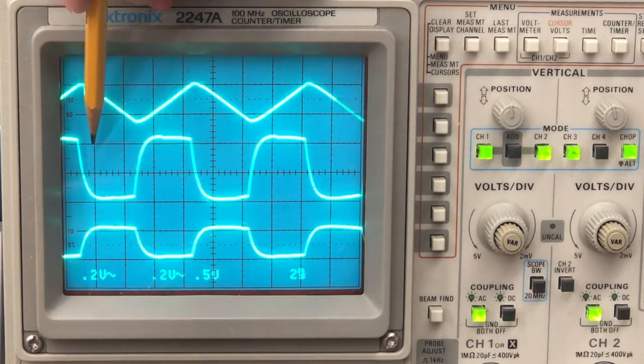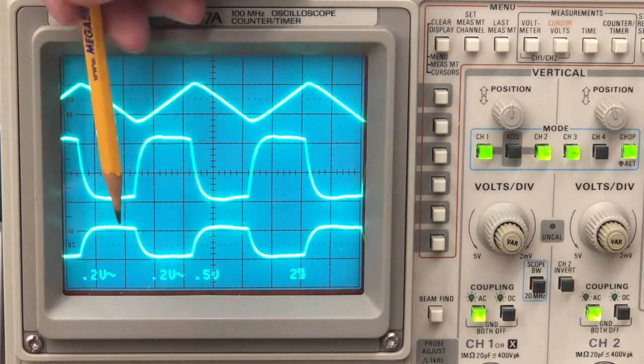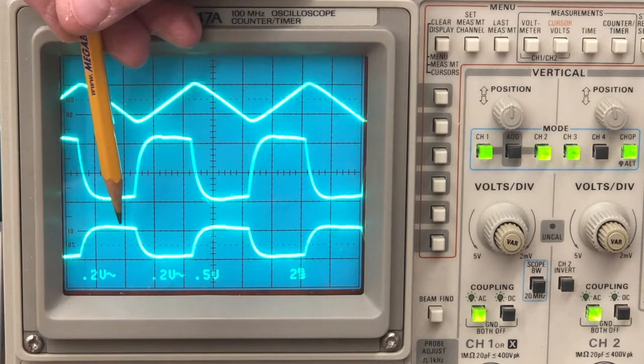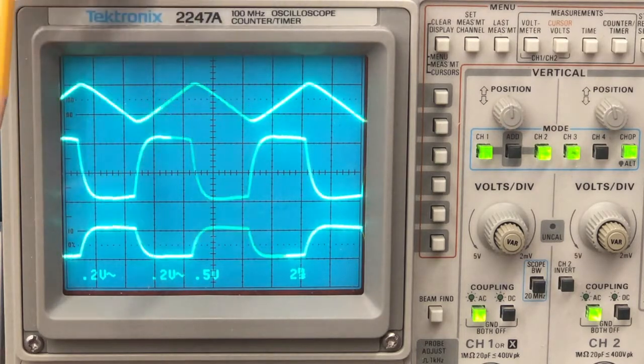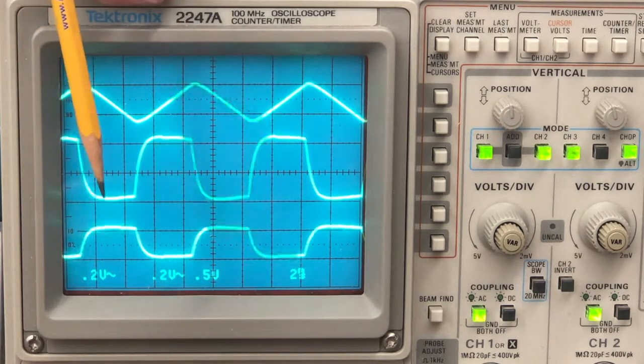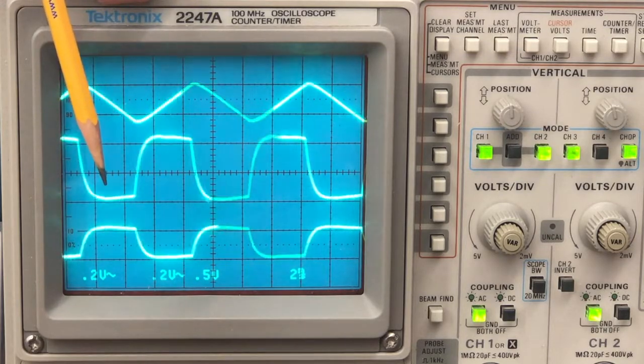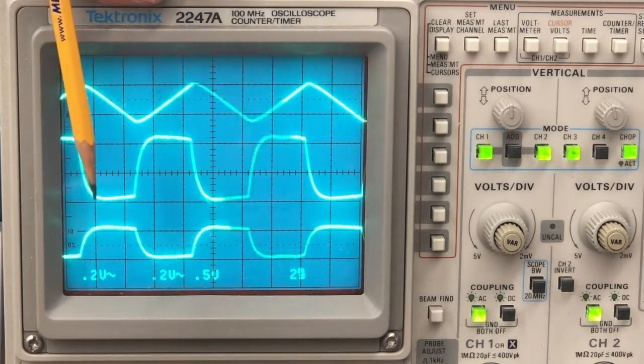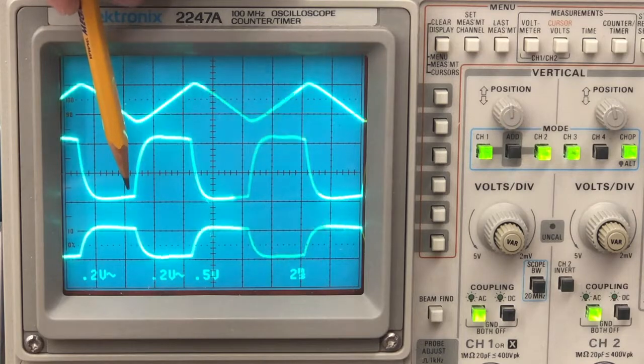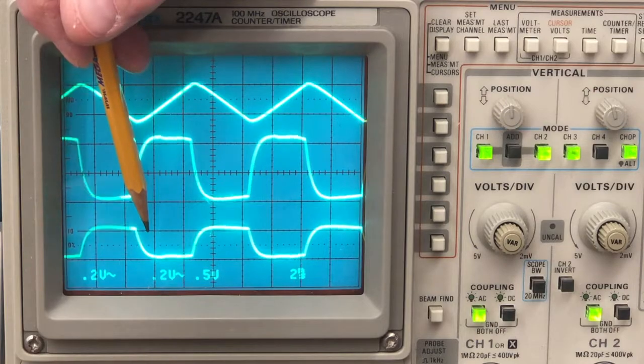This is channel A. This is across the 2K resistor. This is channel B across the 1K resistor. If the same current is being induced in the ring, then channel A should represent twice the voltage of channel B.